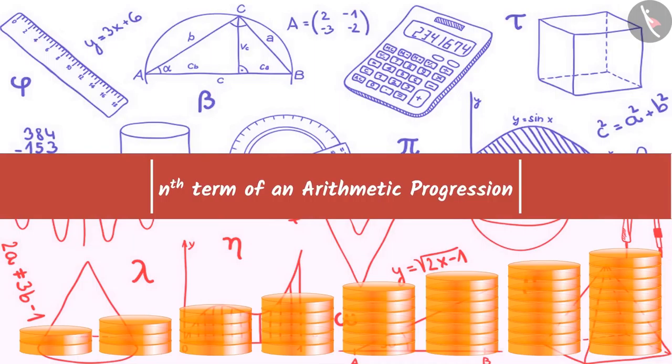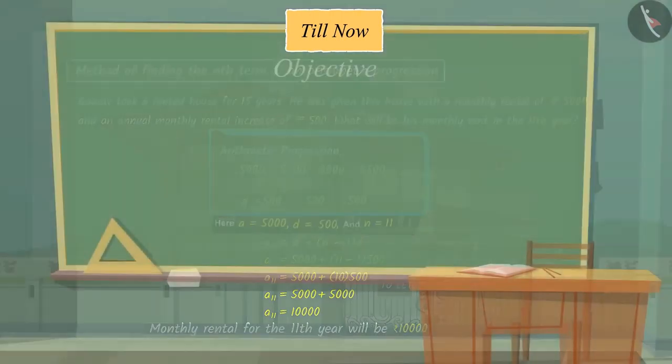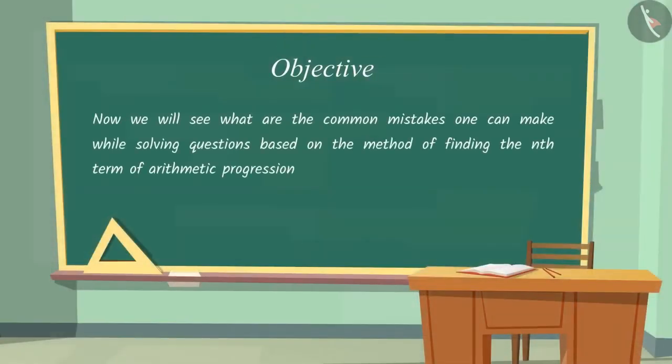Welcome to this video. In the previous video, we saw certain examples based on finding the nth term of an AP. Now we will see what are the common mistakes one can make while solving questions based on this method.